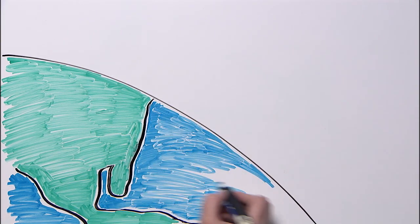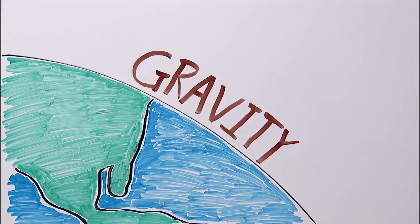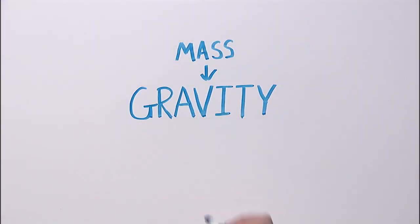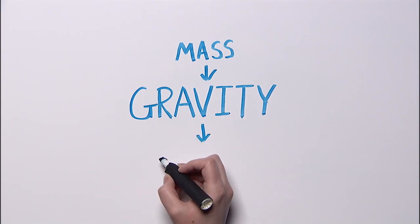So even when we jump in the air, we are still pulled back to Earth. The measure of the pull of gravity on an object is the object's weight.